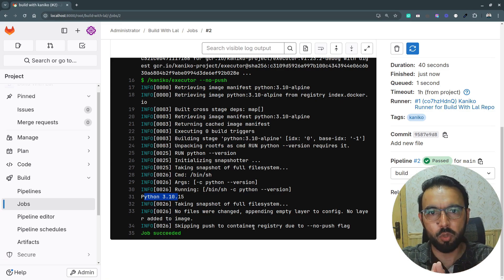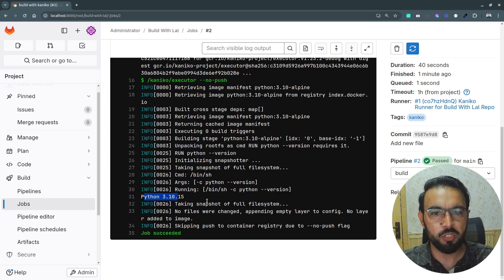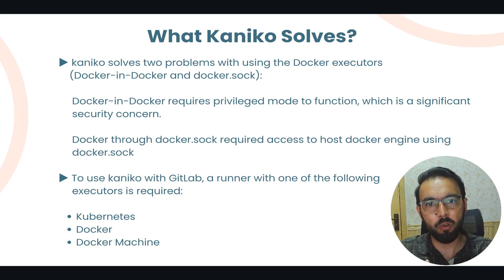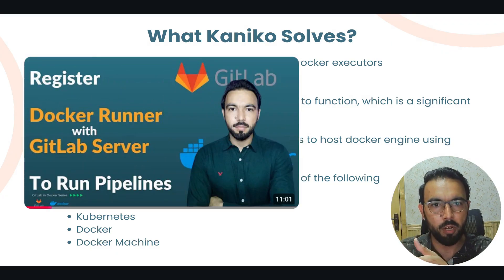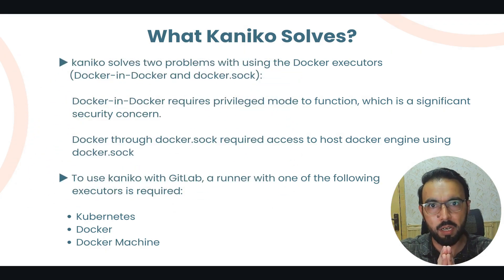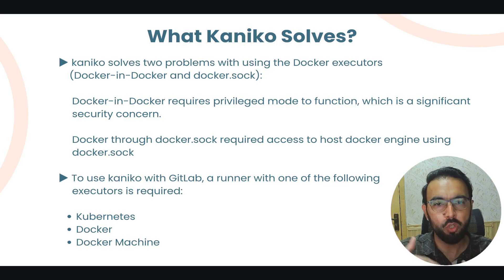This was the basic usage of Google Kaniko. We are not using any Docker-in-Docker service, and we are not mounting the Docker socket file from the GitLab runner to the Docker executor. Kaniko solves two problems: Docker-in-Docker requires privileged mode, which is a significant security concern, and mounting the Docker socket exposes the host Docker engine to the pipeline, where any risky command could affect the host.